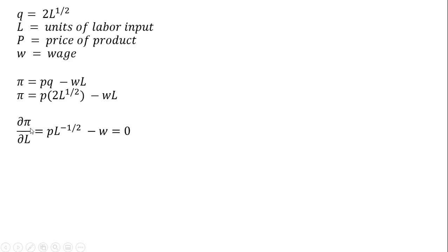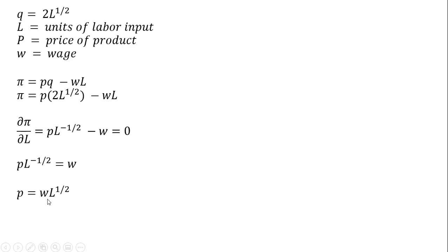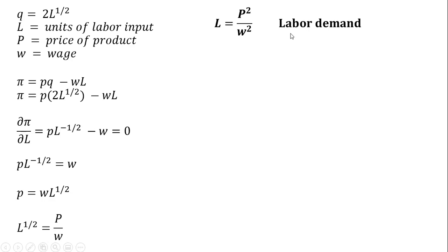I'm going to take the derivative of the profit function with respect to the firm's choice variable. The firm only has a choice of setting L — P and W are given to the firm. Taking the partial derivative of the profit function with respect to L and setting it equal to zero to maximize profit, we solve for L. Dividing through by W and squaring both sides gives us the firm's labor demand.